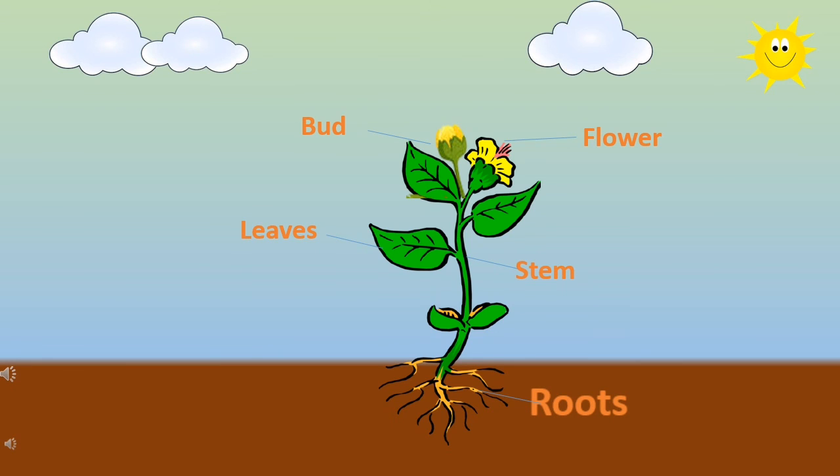Now, let's come to the stem. Stem is the backbone of a plant. And now, here we have leaves. And leaves are very important as they also produce food.